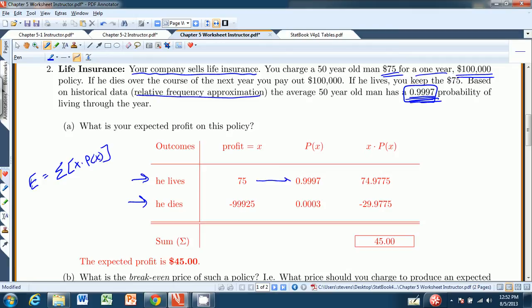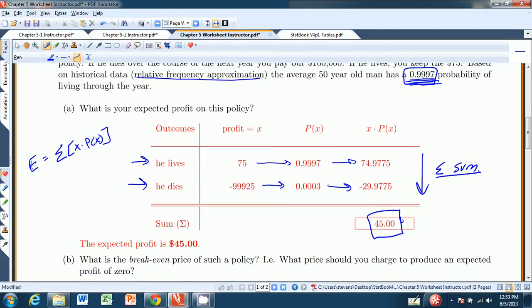And again, we're going to take the sum, the expected value equals the sum of the x times p of x's. So we go x times p of x, gives you 74.9725. x times p of x, negative 29.9725. And then we add them up. That's the summation part. When you add them up, you get $45. So the expected value to you as the company person is 45. That means on average, if you sell a whole bunch of these, you can expect to make $45 per policy.